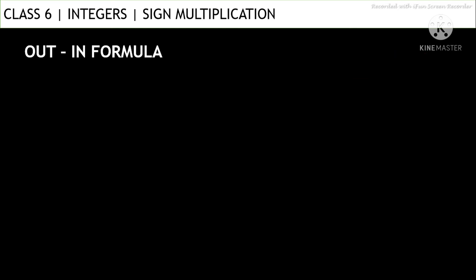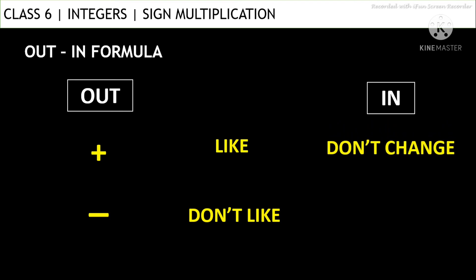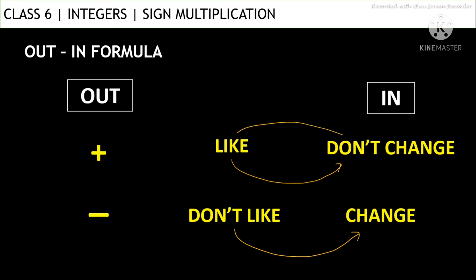The next method is the out-in formula. 'Out' means outside the bracket and 'in' means inside the bracket. For understanding, let's say positive means 'we like it' and negative means 'we don't like it.' When outside is positive we like it, so no changes are needed. When outside is negative we don't like it, so we change what's inside. If you like something, don't change it; if you don't like it, change it.